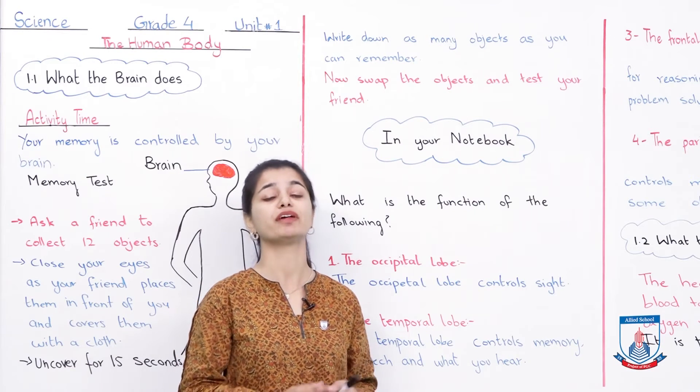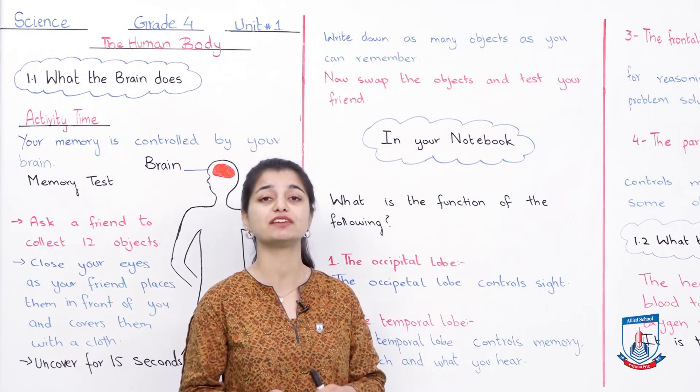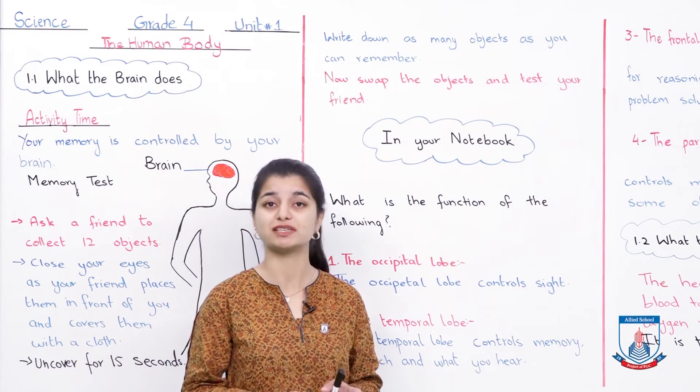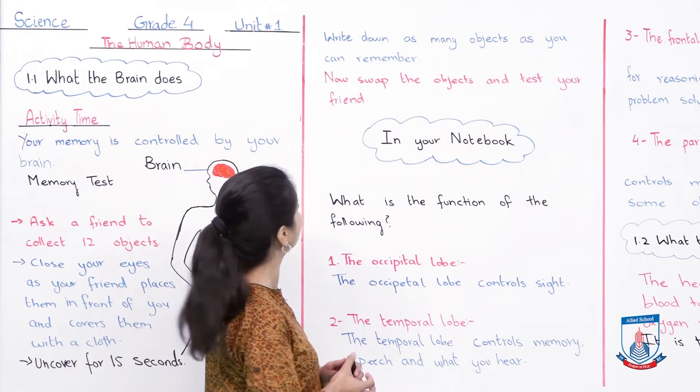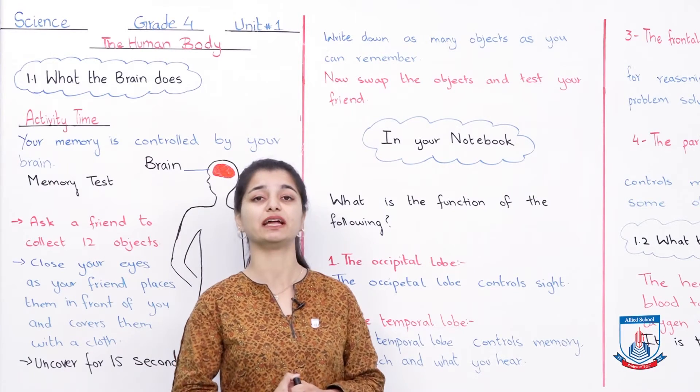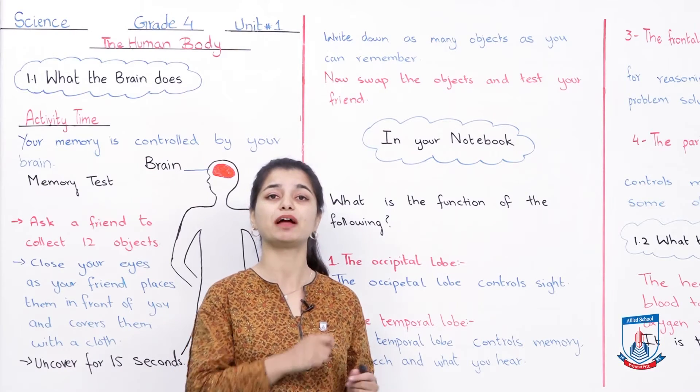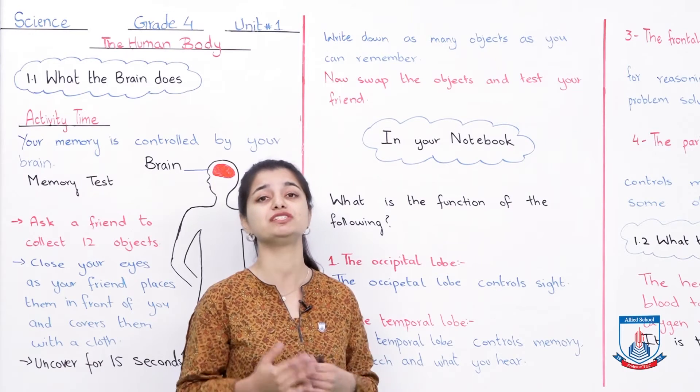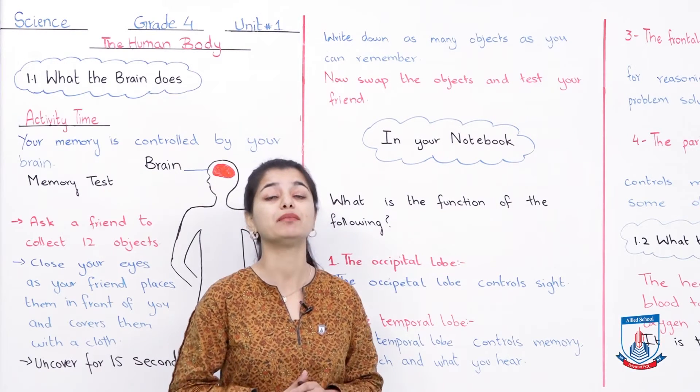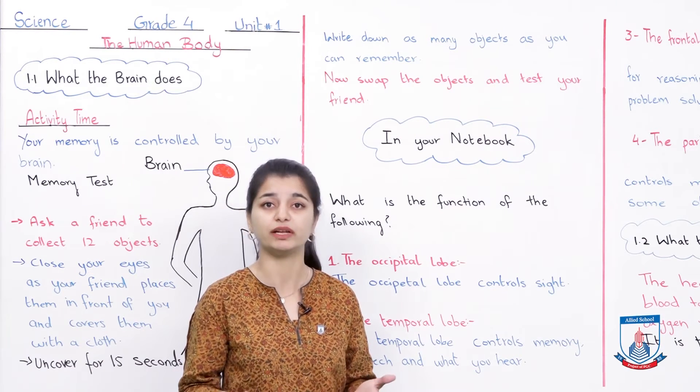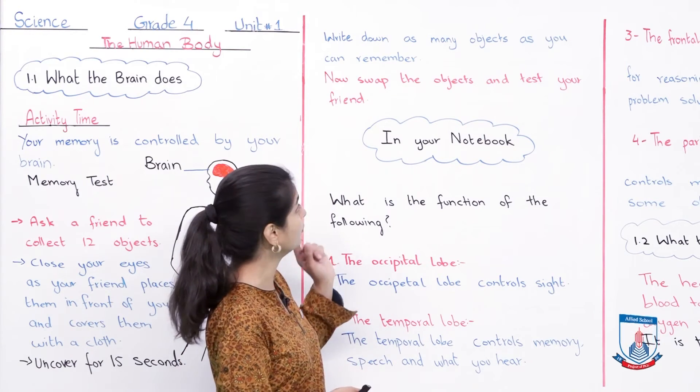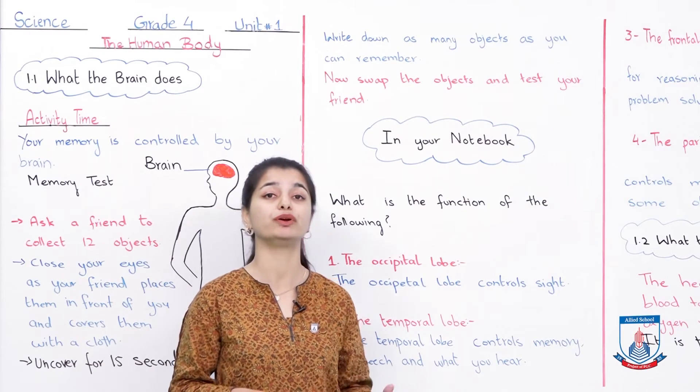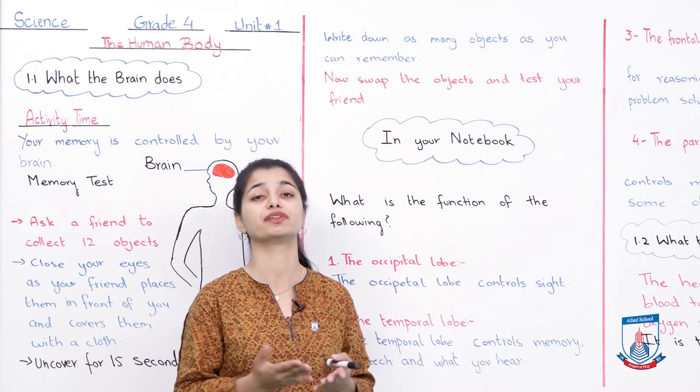So what we've done so far: your friend collected 12 objects, placed them, covered them, and gave you just a 15 second glimpse to see what objects are there. You didn't see the objects before and don't know what your friend collected. After that, write down as many objects as you can remember. After 15 seconds of viewing, they're covered again. Take paper and note down what objects you remember. Then you can see how efficiently your memory worked, how many things you remembered and how many you forgot. You should test your friend as well.